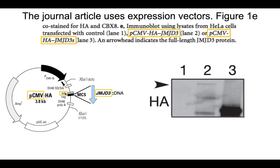My point here is that your paper makes extensive use of expression vectors where we insert our cDNA encoding our protein of interest, JMJD3, into a vector that, when transfected into HeLa cells, will get those cells to produce our JMJD3 protein.